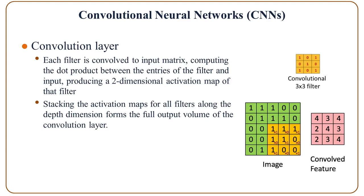Given a kernel or filter — for example, a 3 by 3 matrix — each filter is convolved with the input matrix or input patch to compute the dot product between the elements of the filter and the input patch, in order to get a two-dimensional activation map of the filter.